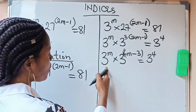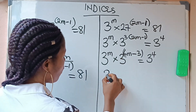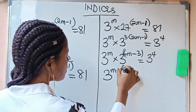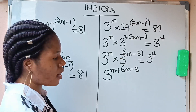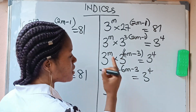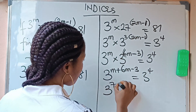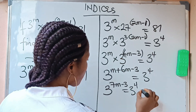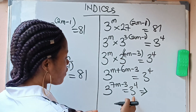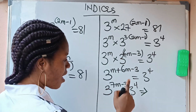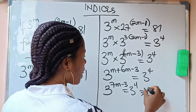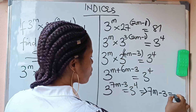Applying this to what we have: we pick one base of 3 and add the powers, giving us 3 raised to the power of m plus 6m minus 3, equal to 3 raised to the power of 4. Combining like terms: m plus 6m is 7m, so we have 3^(7m minus 3) equal to 3^4. Since the bases are the same, the powers must be equal, so 7m minus 3 equals 4.